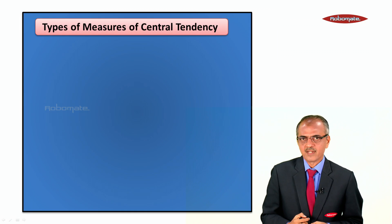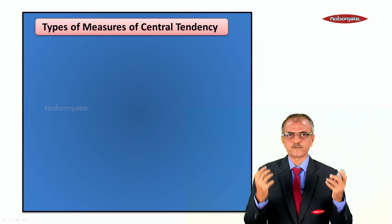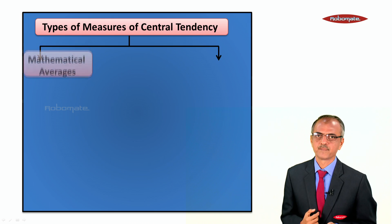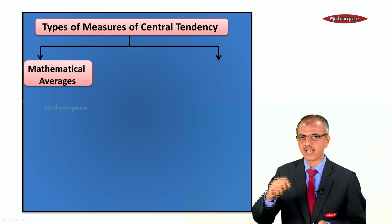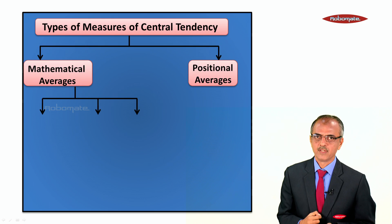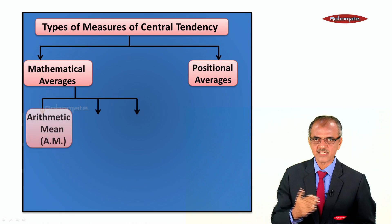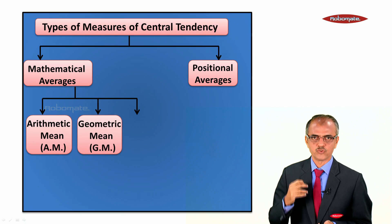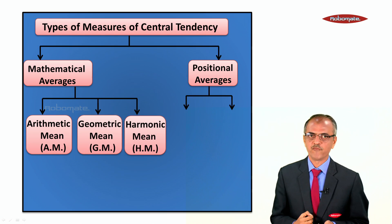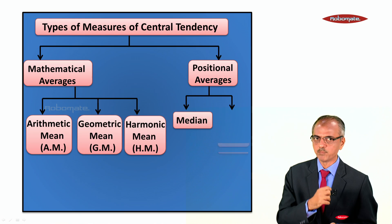Let us understand the types of measures of central tendency. We have two types: mathematical average and positional average. In mathematical averages, we have three types: arithmetic mean, geometric mean, and harmonic mean. In positional averages, we have median and mode.